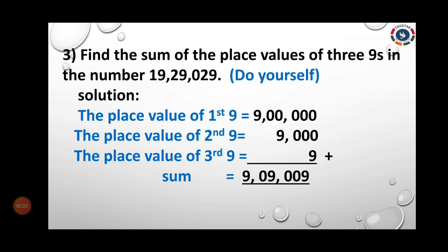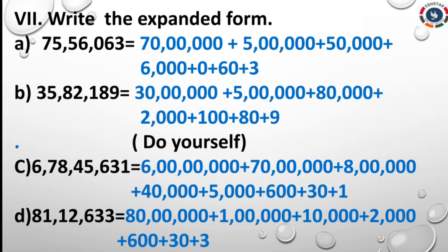Find the sum of the place values of the three 9s in the number 19,29,029. Solution: the place value of the first 9 is 9 lakh; the place value of the second 9 is 9,000; the place value of the third 9 is 9. Sum means you want to add all the values.